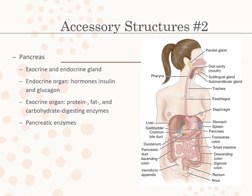The pancreas is both an exocrine gland, releasing secretions into a duct, and an endocrine gland, releasing substances directly into the bloodstream. As an endocrine organ, it produces the hormones insulin and glucagon. As an exocrine organ, it produces various protein, fat, and carbohydrate-digesting enzymes that are released in inactive forms and transported to the duodenum where they are activated.